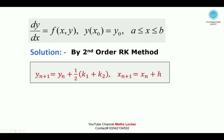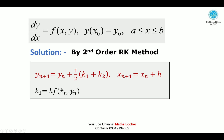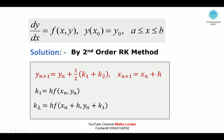The Runge-Kutta formula is: y_{n+1} = y_n + (1/2)(k₁ + k₂), and x_{n+1} = x_n + h. We have two parameters k₁ and k₂ — this is why it is called the second-order method. The value of k₁ = h·f(x_n, y_n), and k₂ = h·f(x_n + h, y_n + k₁).